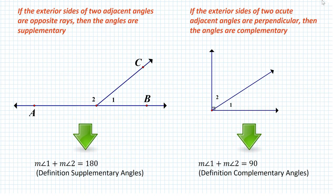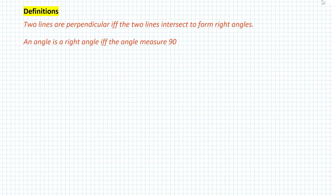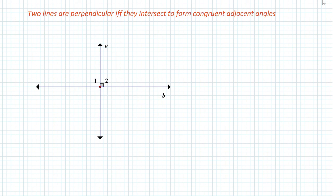Let's summarize what we did in today's lesson. We developed two theorems: if the exterior sides of two adjacent angles are opposite rays, then the angles are supplementary; and if the exterior sides of two acute adjacent angles are perpendicular, then the angles are complementary. We also discussed two new definitions: two lines are perpendicular if and only if they intersect to form right angles, and an angle is a right angle if and only if it measures 90 degrees. Finally, we developed a new theorem: two lines are perpendicular if and only if they intersect to form congruent adjacent angles. Please place any questions in the comment section. Have a great day.